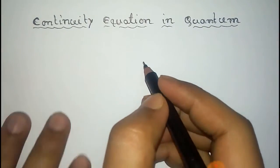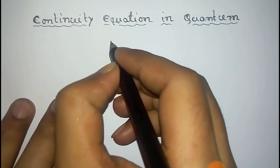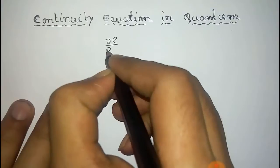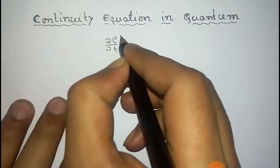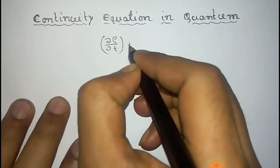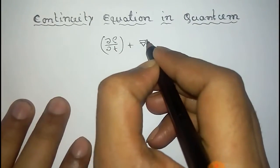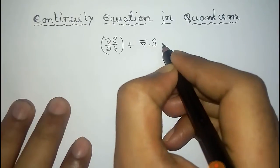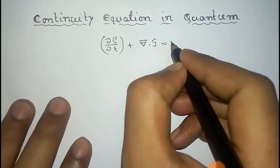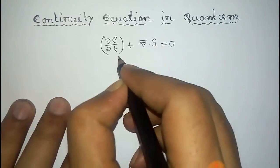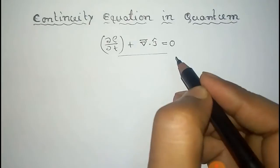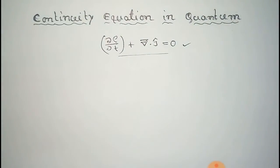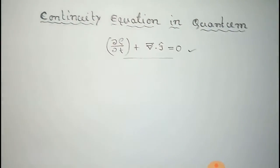We will prove the continuity equation in quantum mechanics. The continuity equation is: ∂ρ/∂t plus divergence of J vector equals zero. This is the continuity equation in quantum mechanics, and we have to prove it.